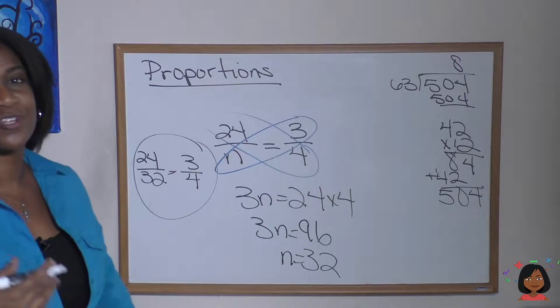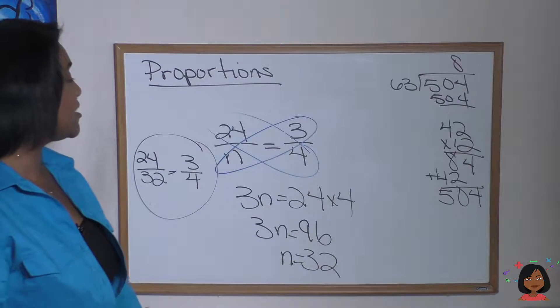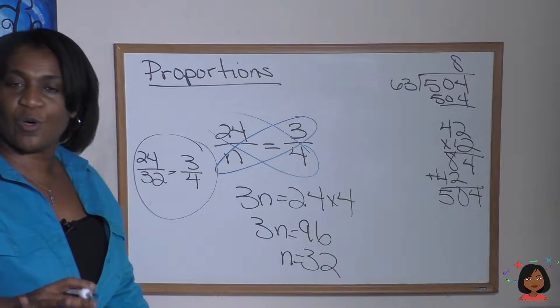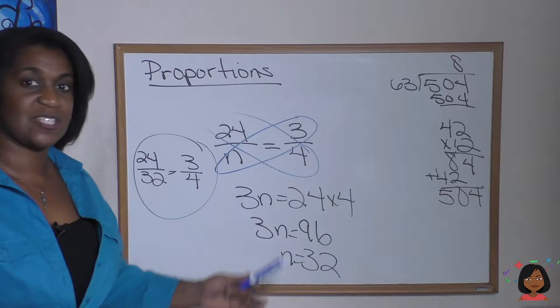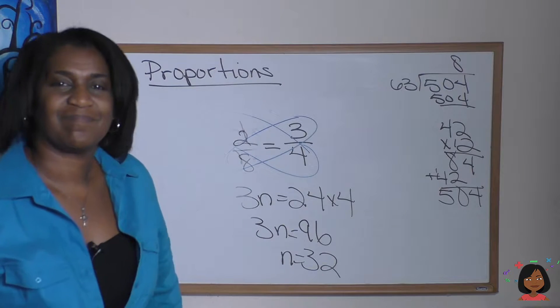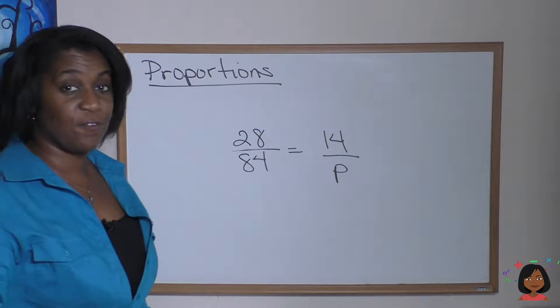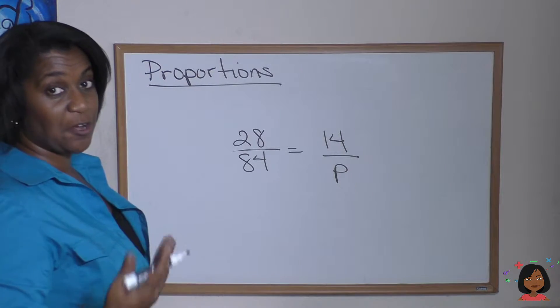If you think about it, proportions are really just forms of equivalent fractions. But sometimes it's not as easy to see. So we use cross multiplication as an easy way to make sure we can find the answer. Let's try one more. Let's try this example. 28 over 84 equals 14 over p.